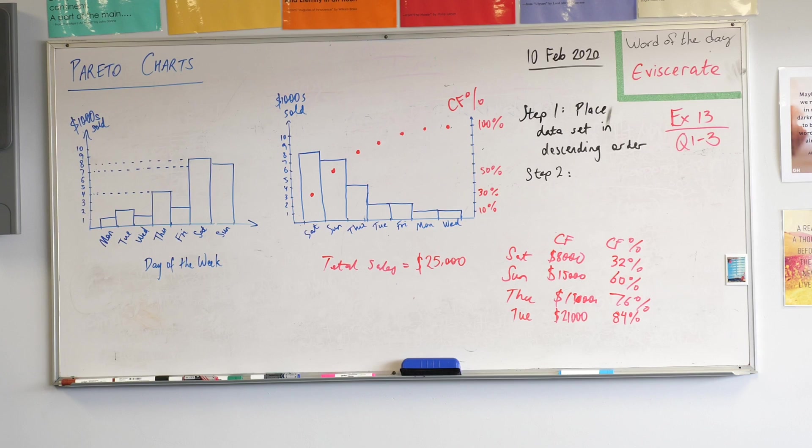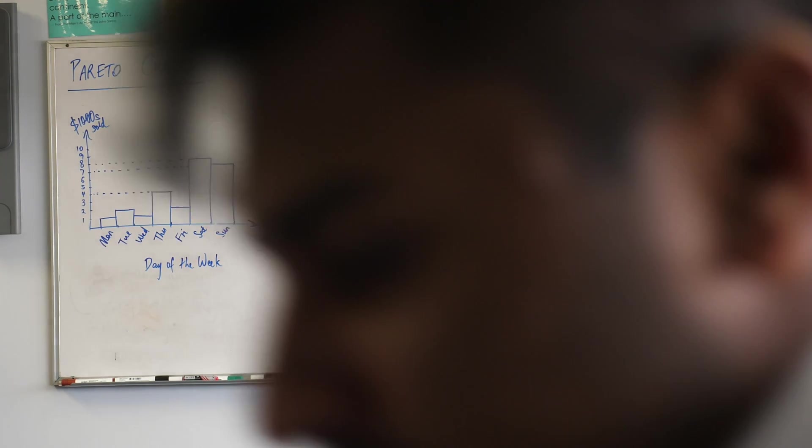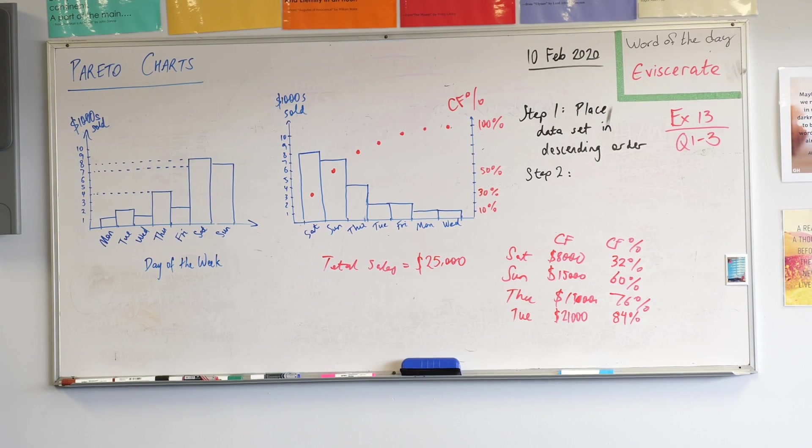So what we're doing is this thing here, it's cumulative frequency percentage. So we say, okay, what percentage of total sales is this day? The answer is it's 8,000 out of the total which we work out is 25,000. If you add up every single one of the columns, 25,000 in the week. So this one will be 8,000 divided by 25,000. What percentage is that? Turns out to be 32%. So on the right hand side, instead of going up by thousands of dollars, we go up by percentages. So that's why, can you see my scale on the right hand side there? 10%, 30%, etc.